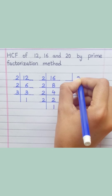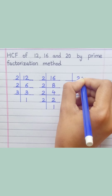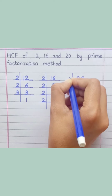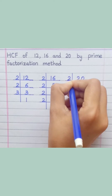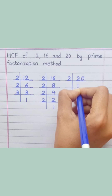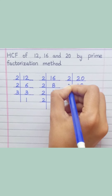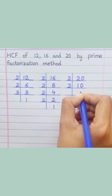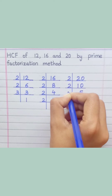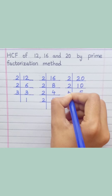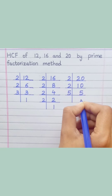20: 2 tens are 20, 2 fives are 10, 5 ones are 5.